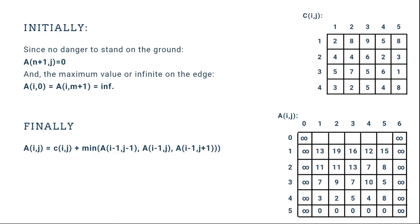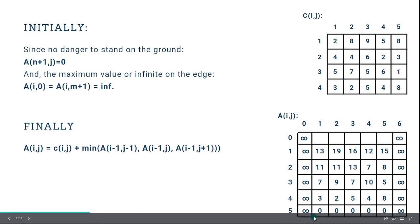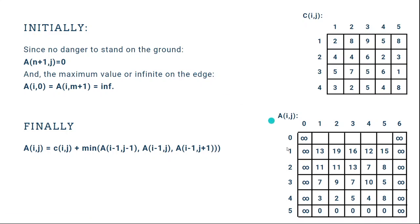Initially, we can set the value in each cell of the table. The ground value is zero because there is no danger to stand on the ground. We can add the maximum value or infinity on the edge.